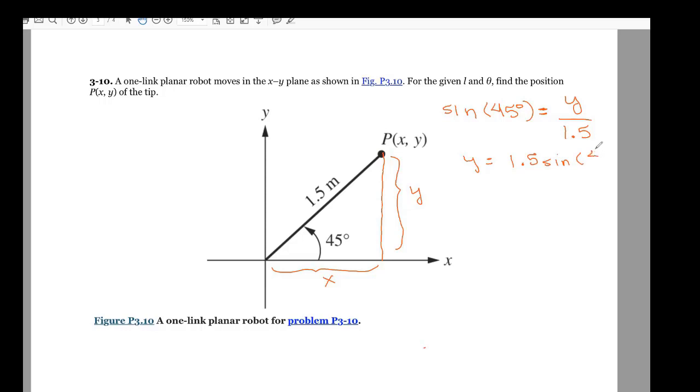Which is equal to 3 halves. I'm just going to change it into fractions because without a calculator, it's much easier to work with fractions than decimals. And the sine of 45 degrees is the square root of 2 over 2. So that means Y is equal to 3 times the square root of 2 over 4.